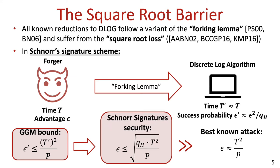The situation is similar when considering Schnorr signatures. There, the forking lemma allows us to convert a forger that runs in time t and has advantage epsilon into a D-log algorithm that runs in time roughly t and has success probability roughly epsilon squared over q_H, where q_H is the number of random oracle queries issued by the forger. If we work in a group in which the D-log problem is assumed to be as hard as in the generic group model, this implies that epsilon is at most the square root of q_H times t squared over p. Again, this can be much greater than the best-known attack via discrete-log computation.